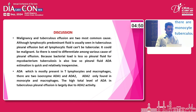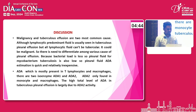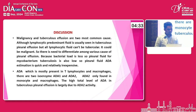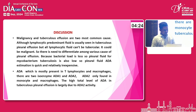Malignancy and tuberculosis are the most common causes of pleural effusion. Although lymphocytic predominant fluid is usually seen in tuberculous pleural effusion, not all lymphocytic fluid is tubercular — it could be malignant. Therefore, there is a need to differentiate among the various causes. Because bacterial load is less, pleural fluid positivity for Mycobacterium tuberculosis is also low, making pleural fluid ADA estimation a quick and relatively inexpensive alternative.